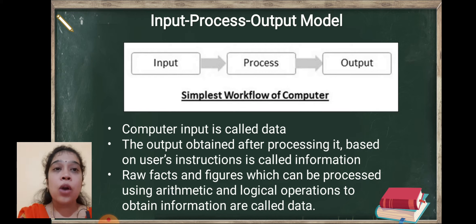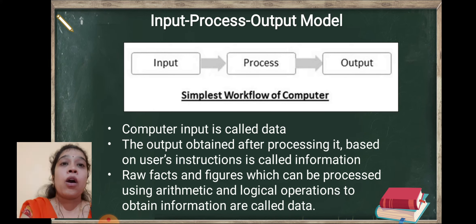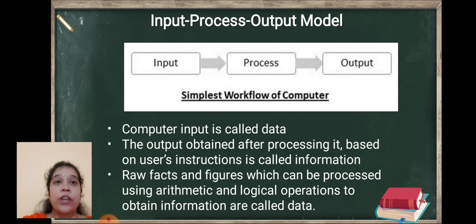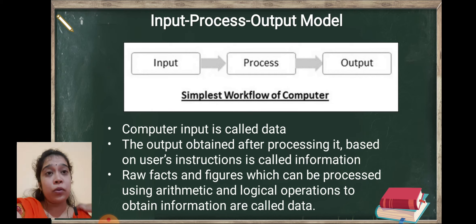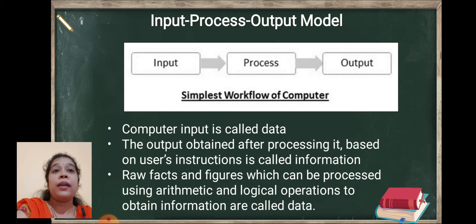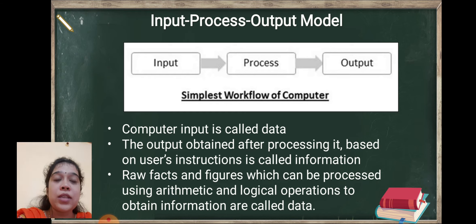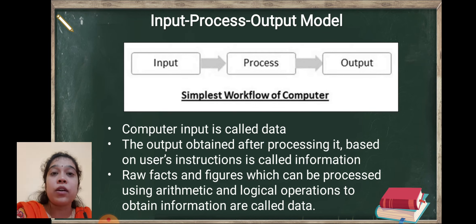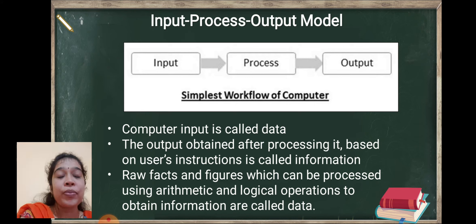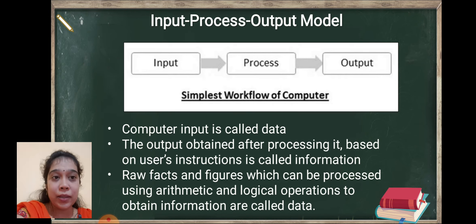Output is obtained after processing by the computer on the raw data. Means whatever raw data we provide to the computer, computer processes it and gives output to us. Hence output obtained after processing, based on the user's instruction, is called as information. Hence output is called as information. And what is process?